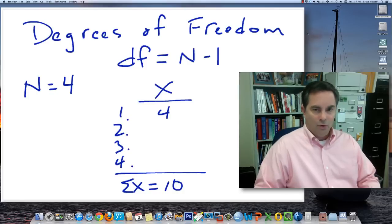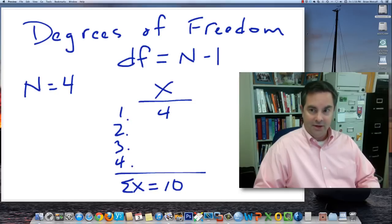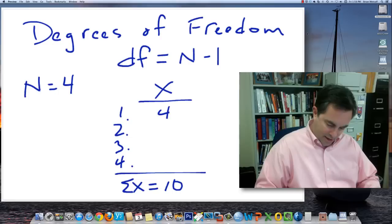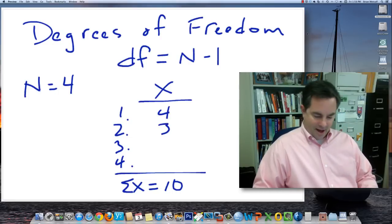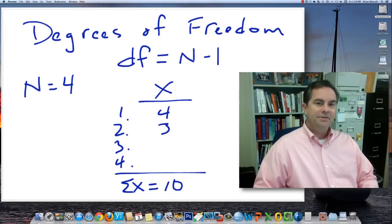Again, I have opening up the door to all forms of number, from negative infinity to positive infinity. So the second number is totally free to vary. It can be anything. And I'm going to say that it equals 3. I'm up to 7 now. Two more numbers to go.